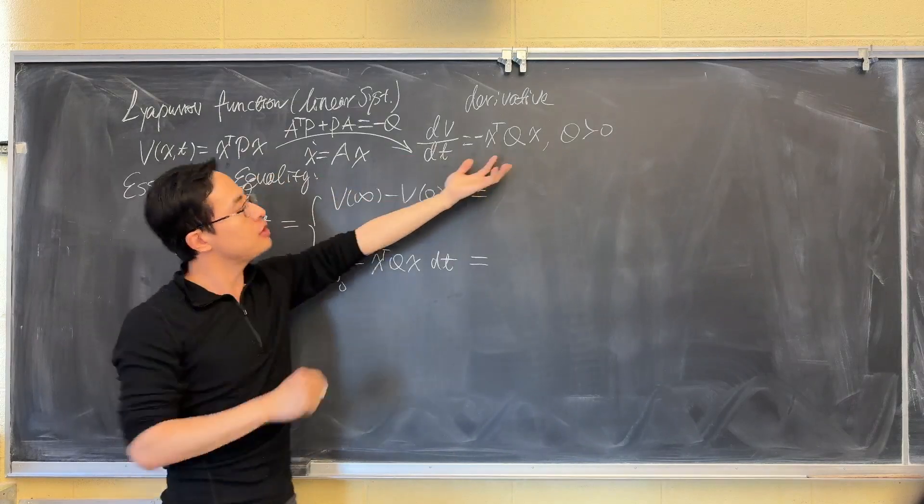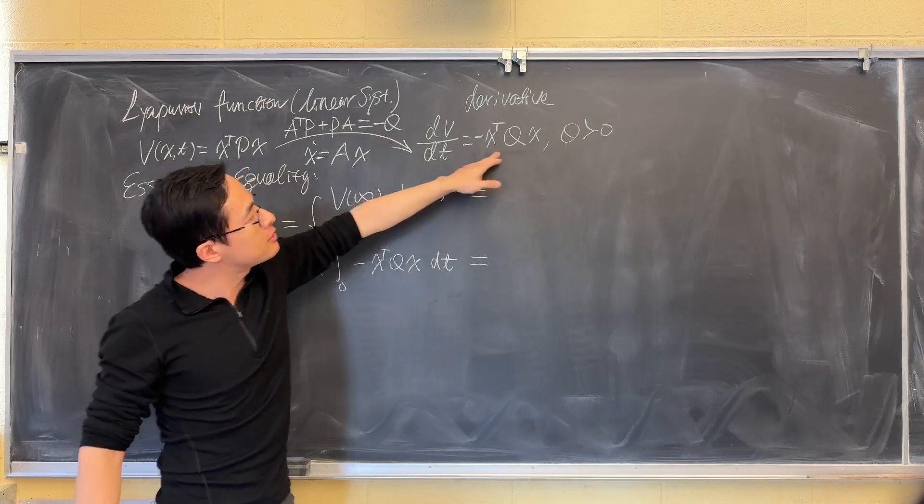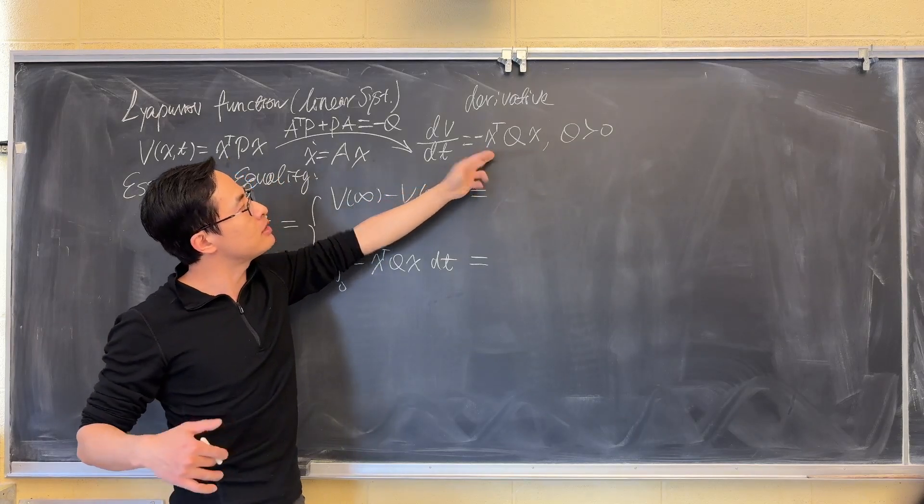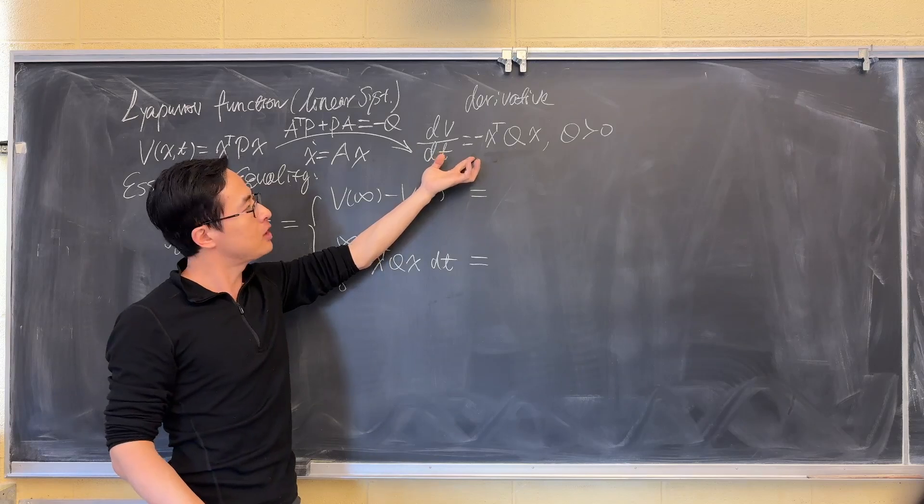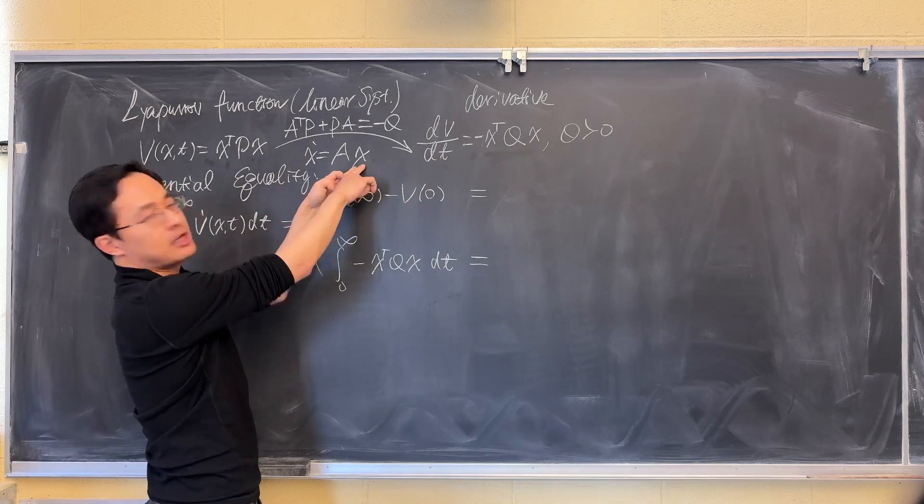If Q is positive definite, then this function is a negative definite function. That means the energy will decrease, will keep decreasing until the energy reaches zero at the origin of the state space.